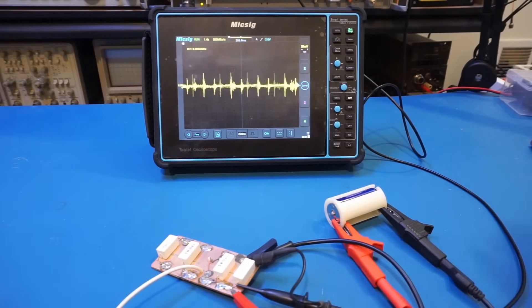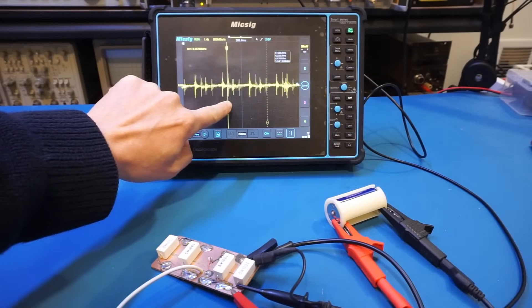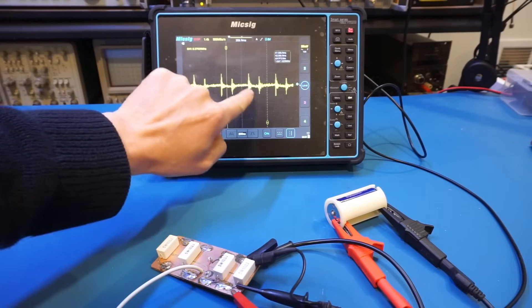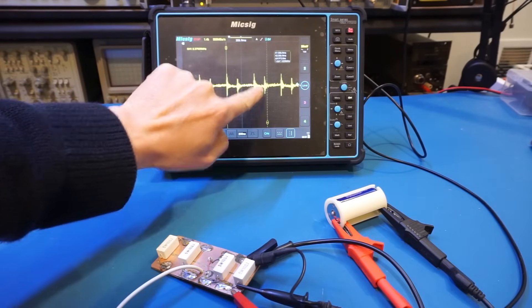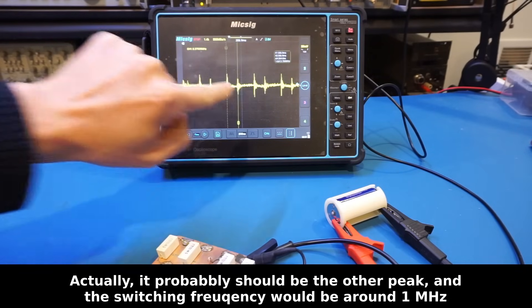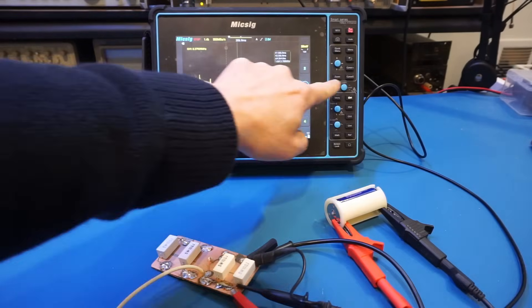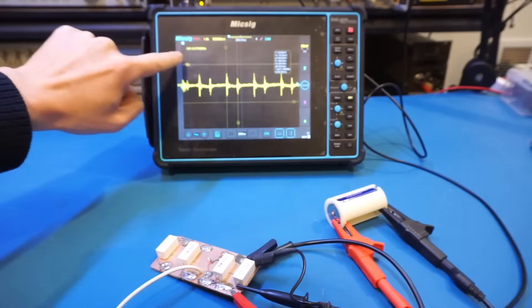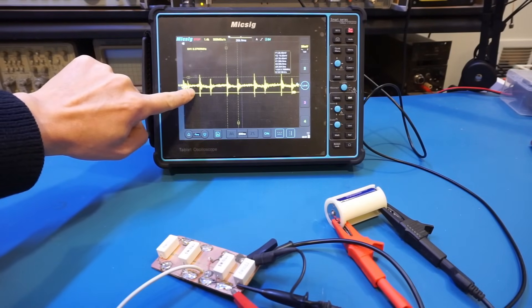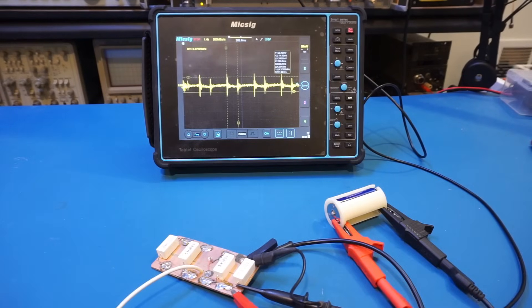So let's actually take a look at the switching frequency here. So we're roughly talking about, let's stop this here. So it's roughly 3.8 megahertz switching frequency. And let's just take a look at the peak to peak value here. So we're talking about 35 to 40 millivolts.